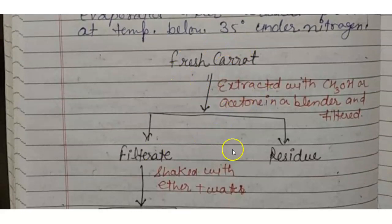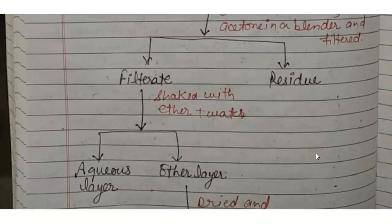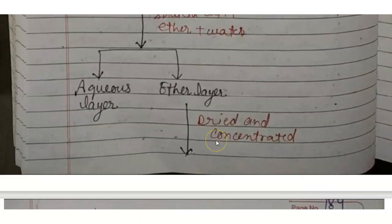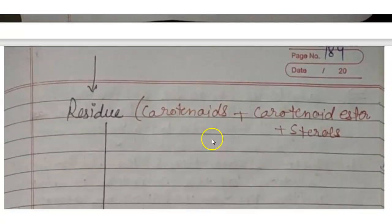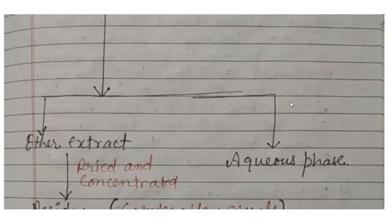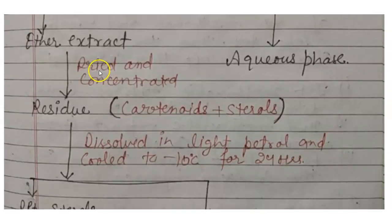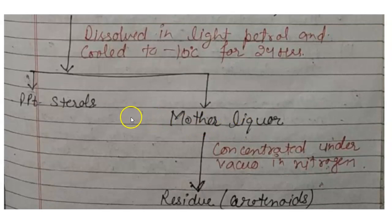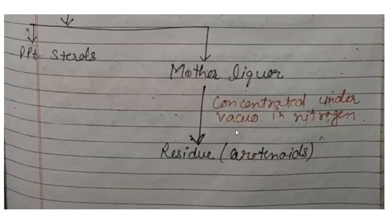The isolation procedure: fresh carrots are blended and filtered to give a filtrate; the residue is extracted with KOH/acetone in the blender. The filtrate is shaken with ether and water to give an aqueous layer and an ether layer. The ether layer is dried and concentrated to give a residue containing carotenoids. This is dissolved in light petroleum and cooled to 10°C for 24 hours to precipitate sterols, leaving carotenoids in the residue.